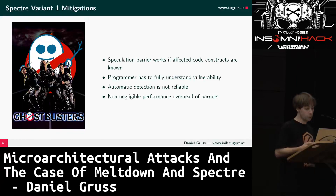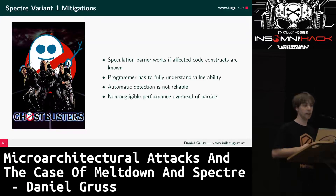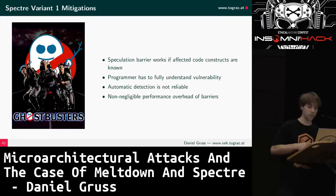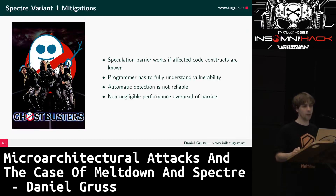The speculation barrier introduces a non-negligible overhead — if you insert it after every bounds check, you'd still see a performance overhead of roughly a factor of two, three, or four. For Spectre Variant 2, the situation might be a bit better because it relies heavily on out-of-place mistraining, which you can prevent.